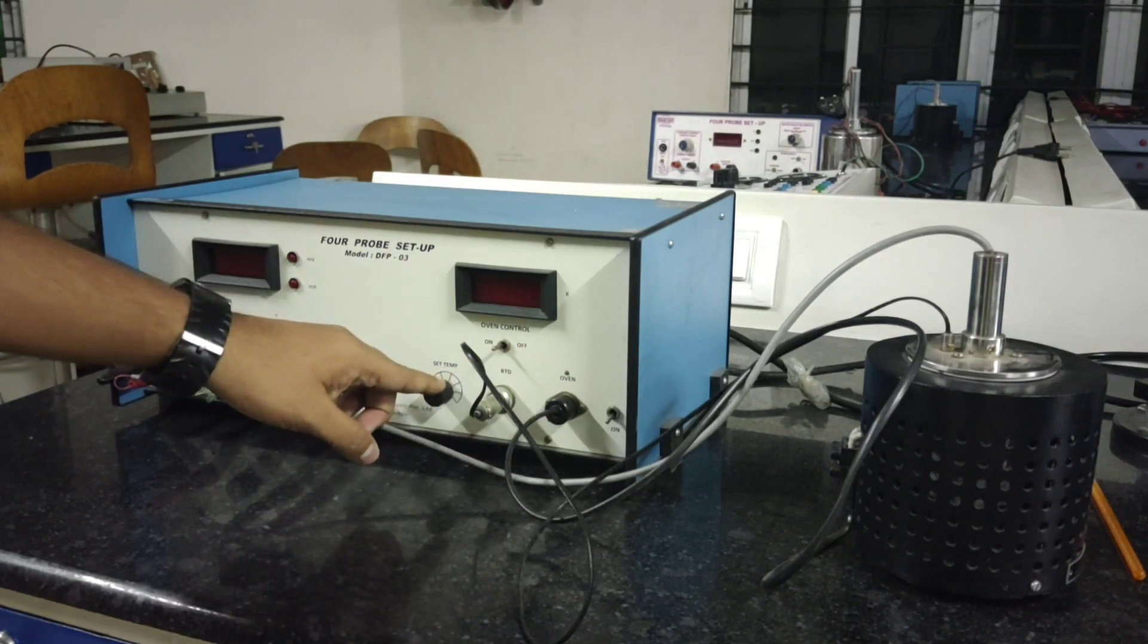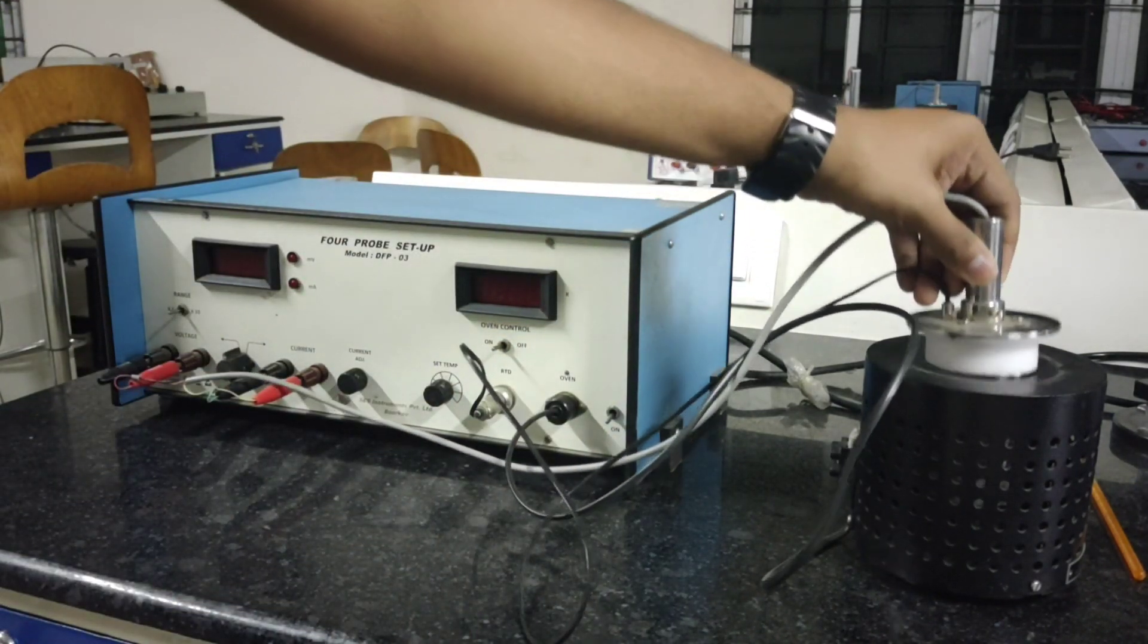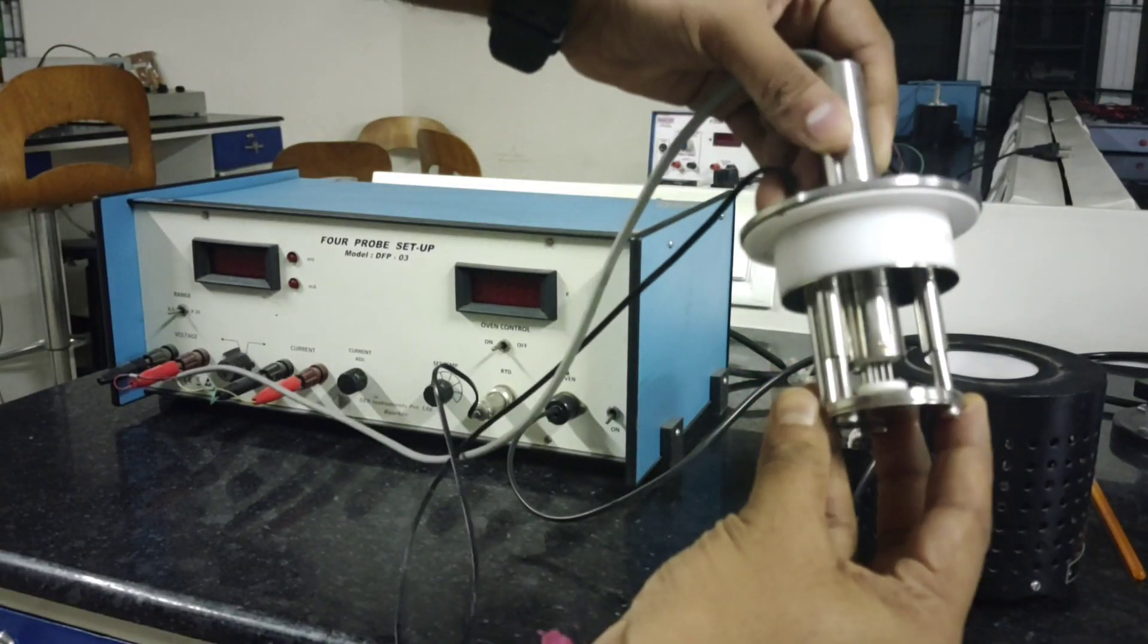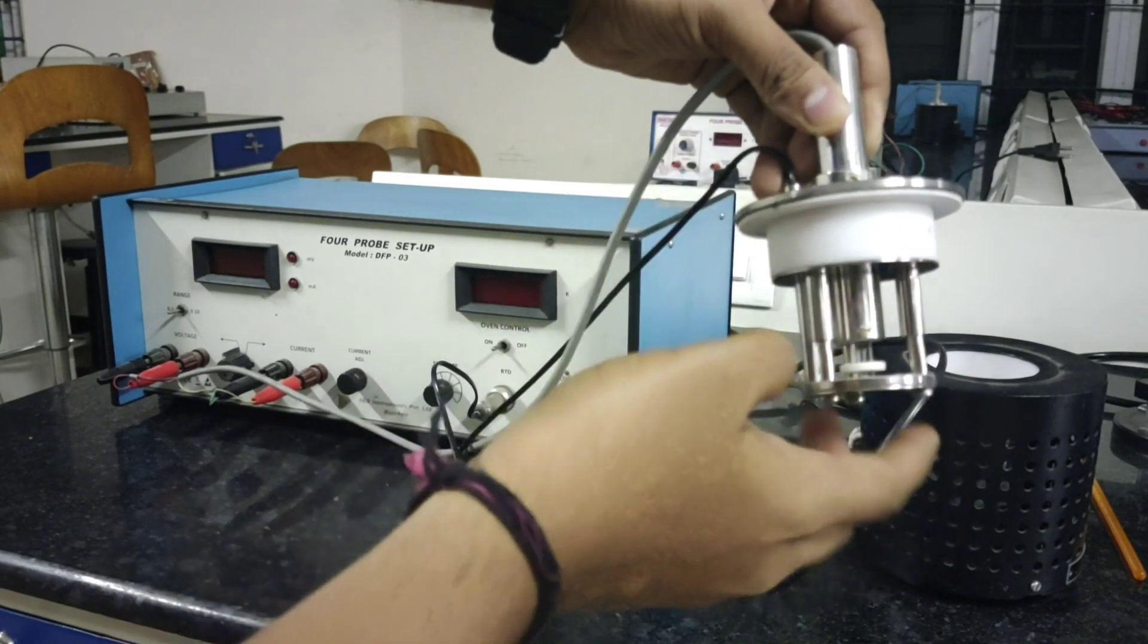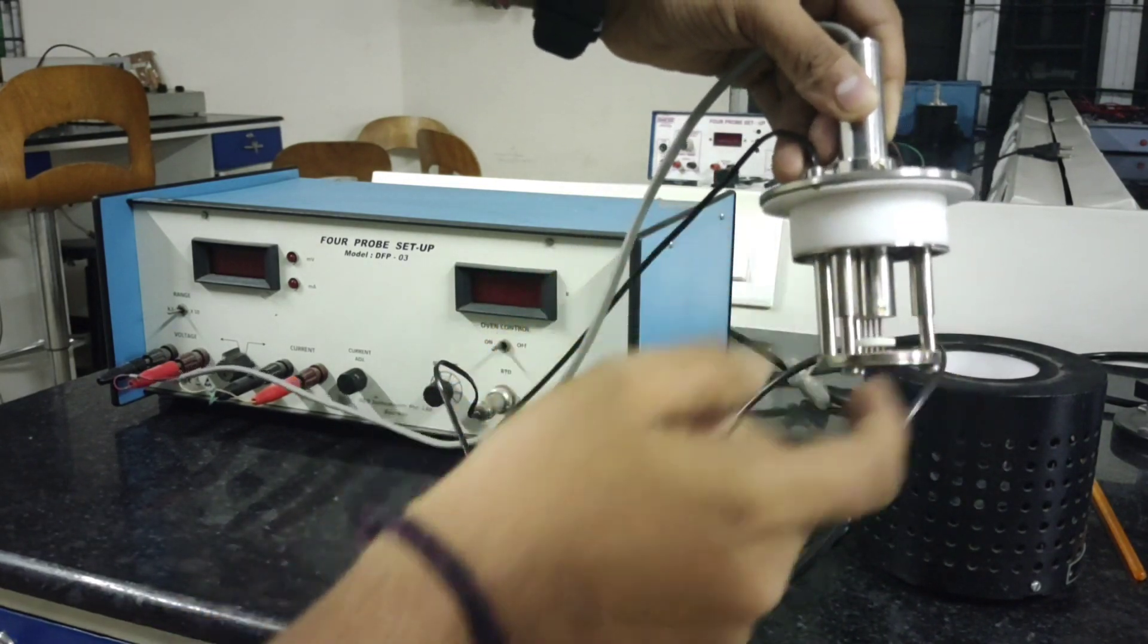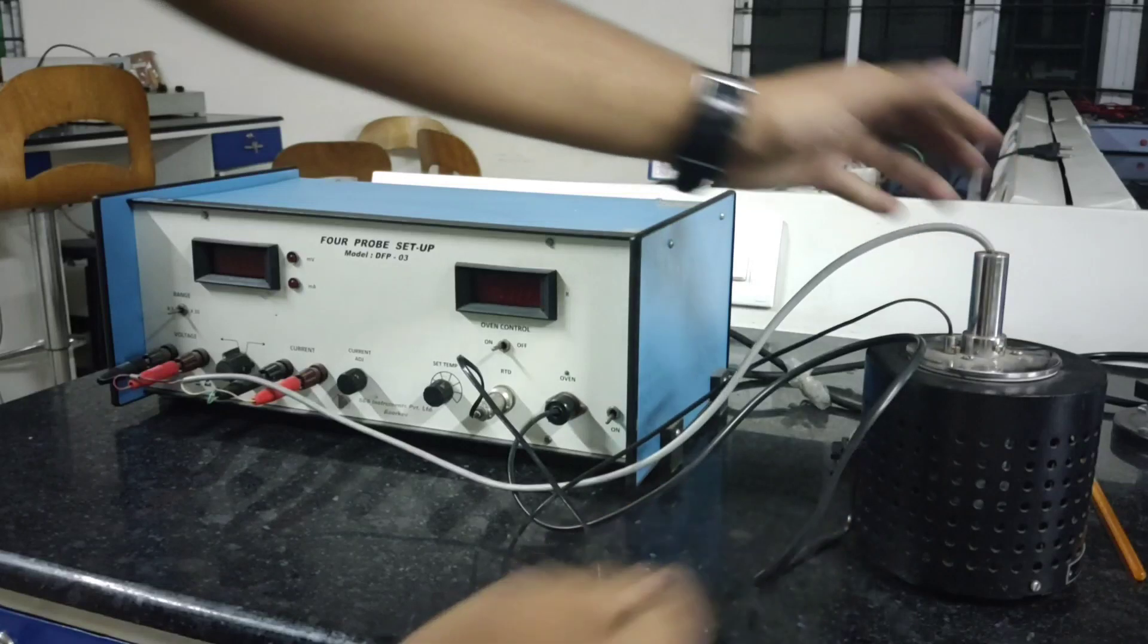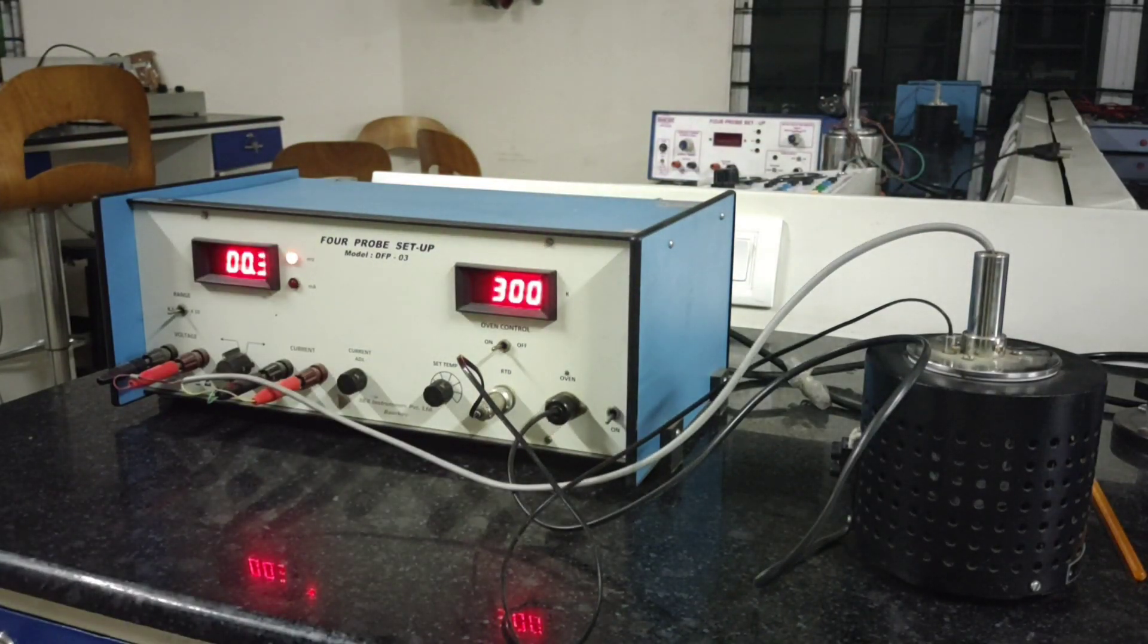This is the oven. If you take out this component, this is the four probe. If you can see closely, there are four tungsten probes, and this is where you are going to keep your semiconductor sample which will be provided to you from the lab. You will place it inside the oven and then turn on the machine and let it settle down for a few minutes.